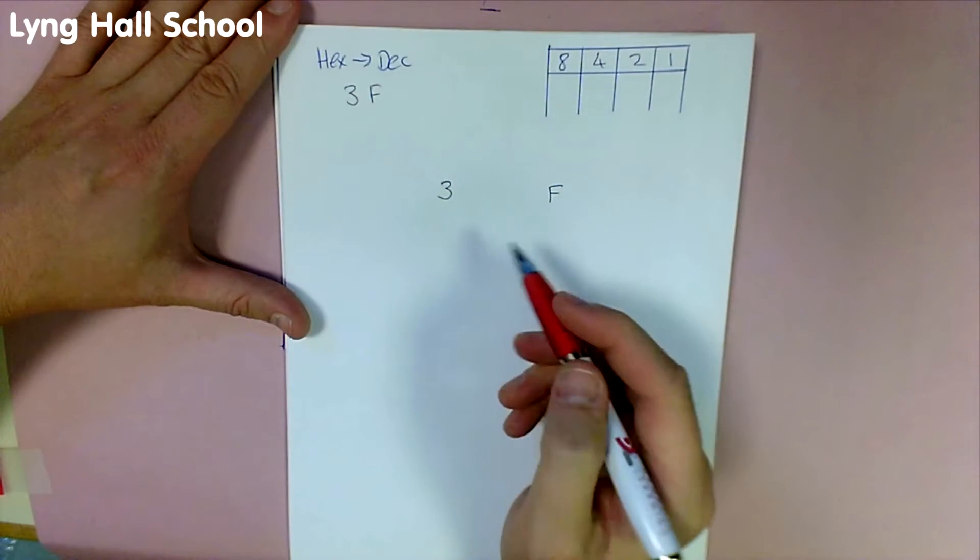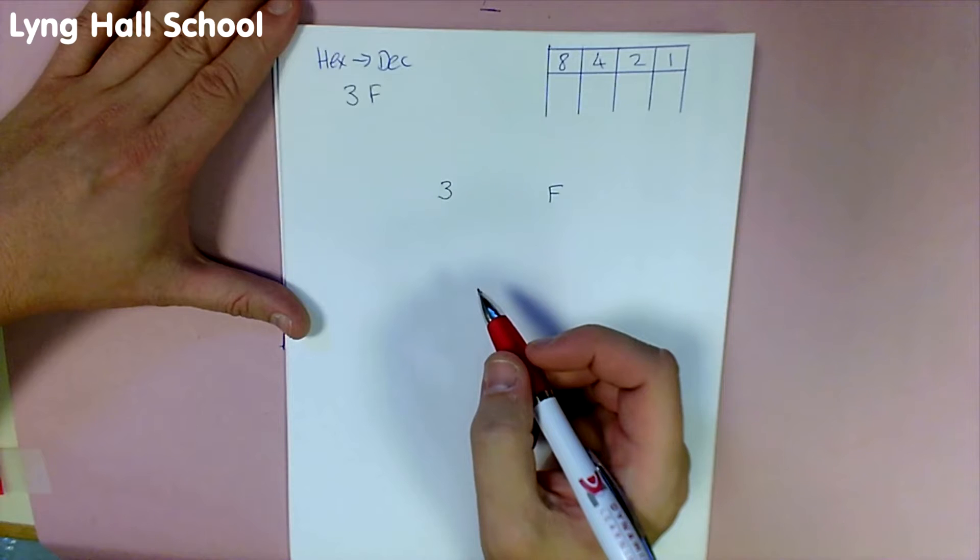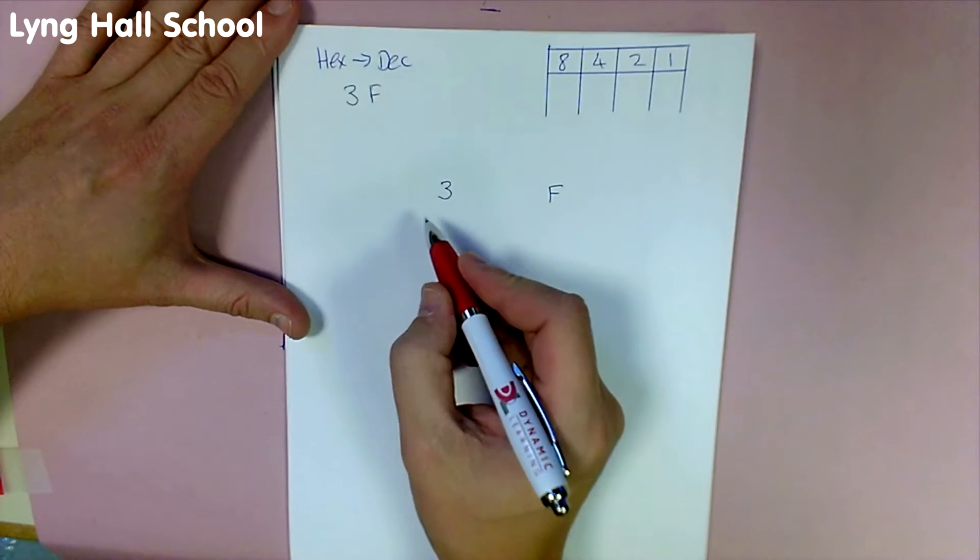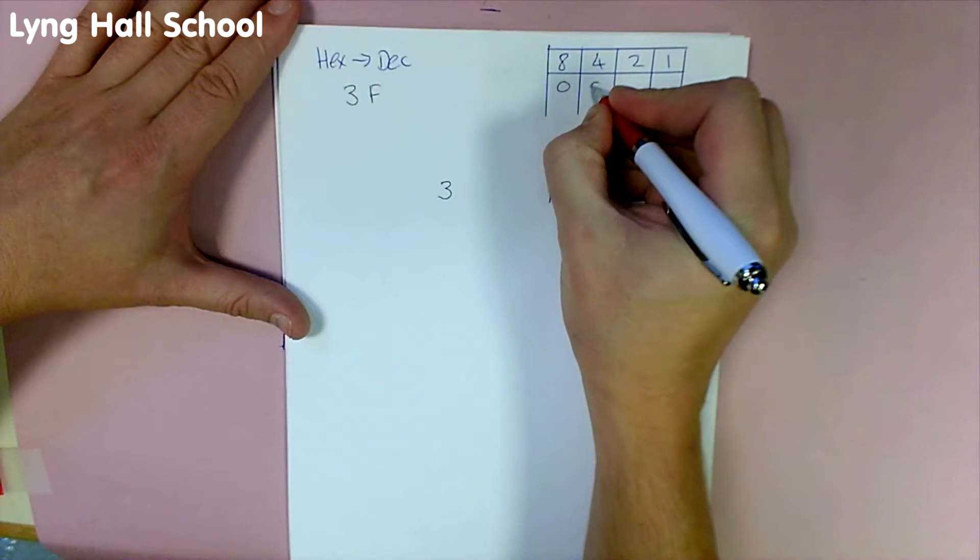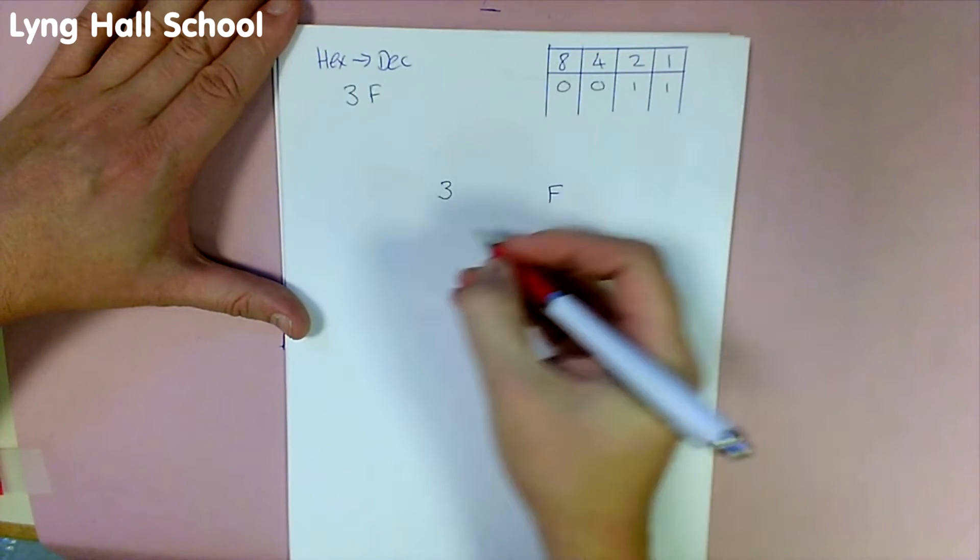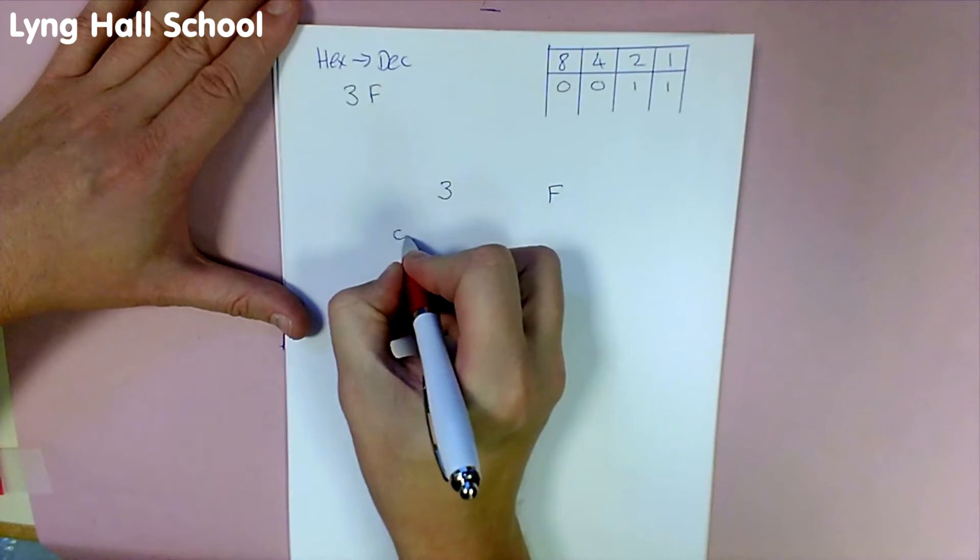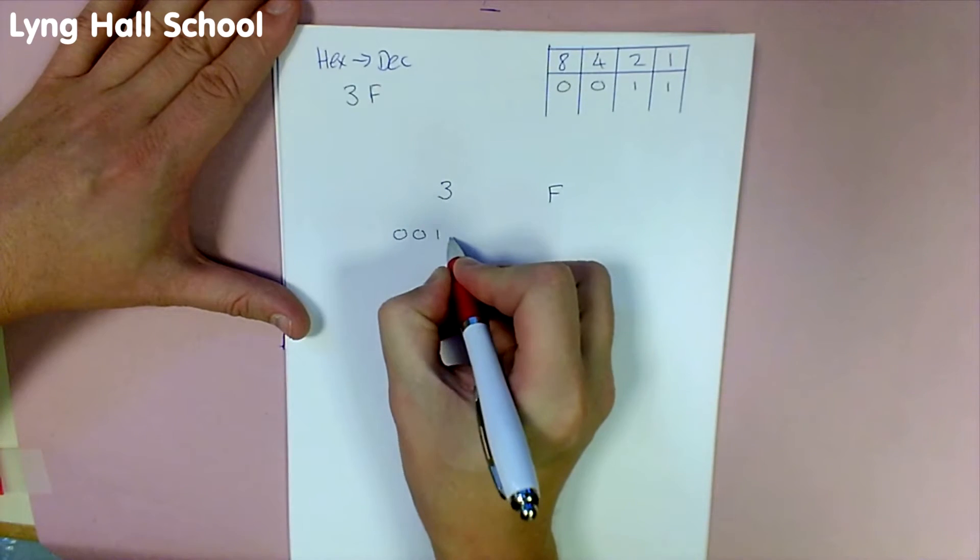And we'll convert these individually to 4-bit binary numbers. We'll start with 3, which in our chart over here will be 0, 0, 1, 1. So under here, we'll write 0, 0, 1, 1.